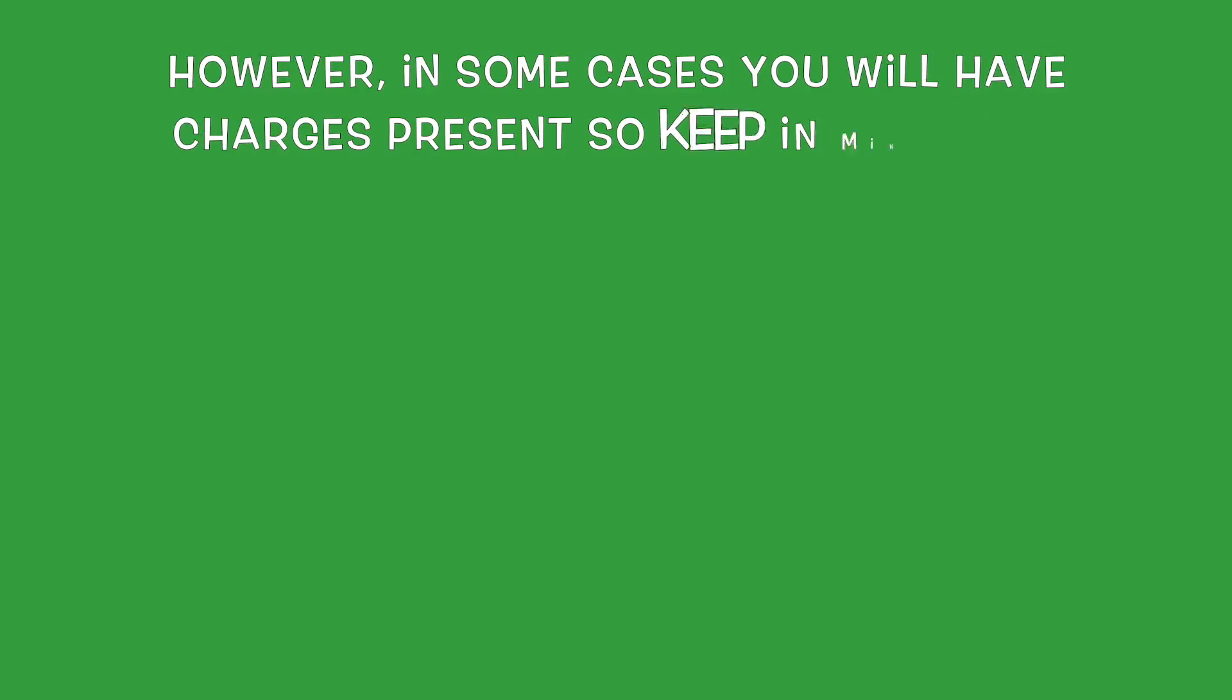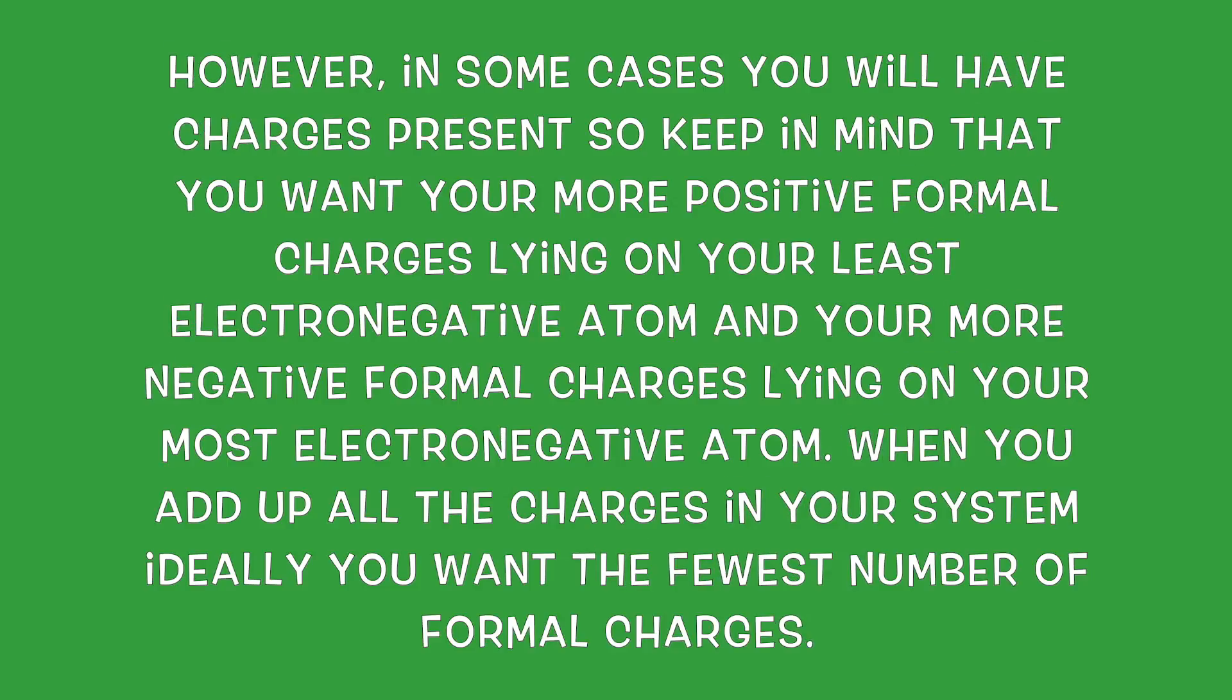When determining the most stable structure based on formal charges, the structure that has no charges is the most stable. However, in some cases, you will have charges present, so keep in mind that you want your most positive formal charge lying on your least electronegative atom and your more negative formal charge lying on your most electronegative atom. When you add up all the charges in your system, ideally you want the fewest number of formal charges.